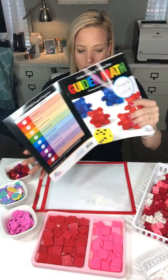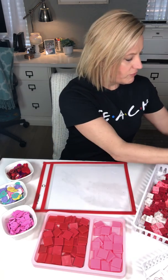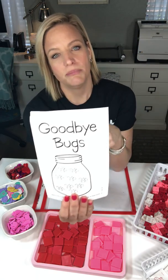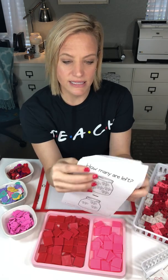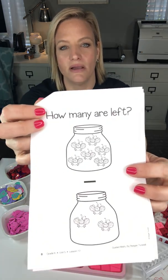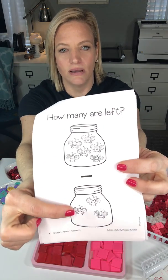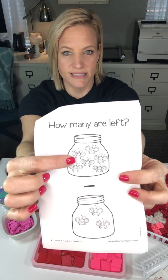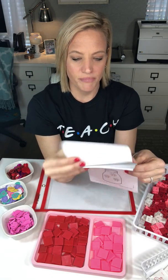In our whole group mini lesson before I pulled them, we read the book Goodbye Bugs, which shows representations of sets of bugs, how many are left. We say the value and then talk through separating three from the first set — each page is a different set of bugs.